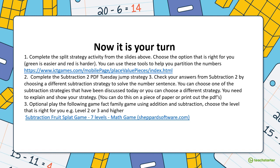First, complete the split strategy activity from the slide. Choose the option that is right for you — green is a little easier and red is a little harder. You can use tools to help you partition the numbers. If we were at school we'd be using blocks, and you can do that at home too — counters, toys, anything works for tens and ones. If you can just show your working out, that's great as well. You don't have to use hands-on materials if you don't need to.